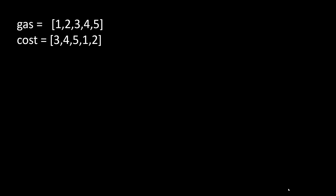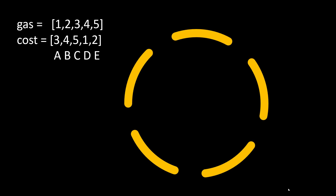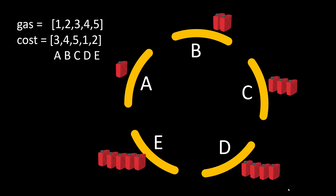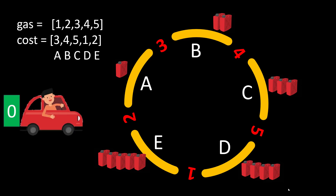Let's understand this particular problem. This is the example given to us — we have two arrays: the gas array and the cost array. Let's take each point as a, b, c, d, e and since it is a circular circuit, we'll define it as such — five points in this circular circuit. Each point has some amount of gas we can get from it, and to move from one point to another there is a cost associated with that. Moving from a to b costs 3, b to c is 4, c to d is 5 and so on. We are in a car with zero tank and can start from any of these indexes.